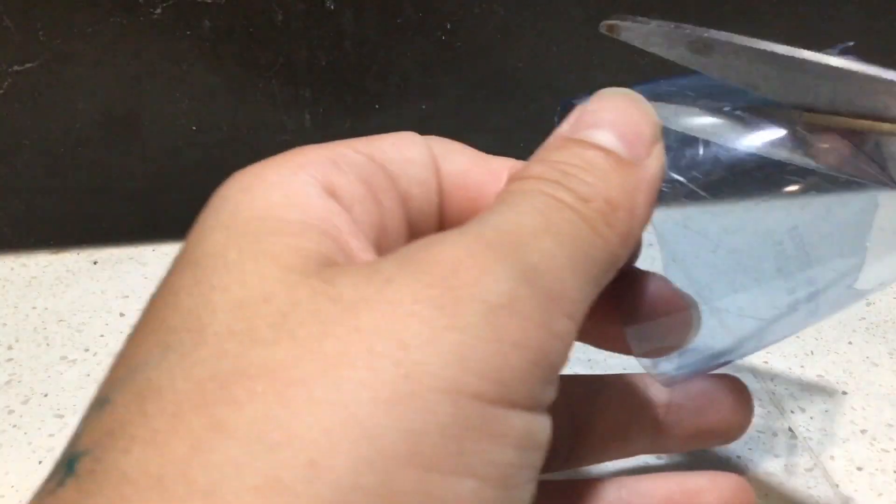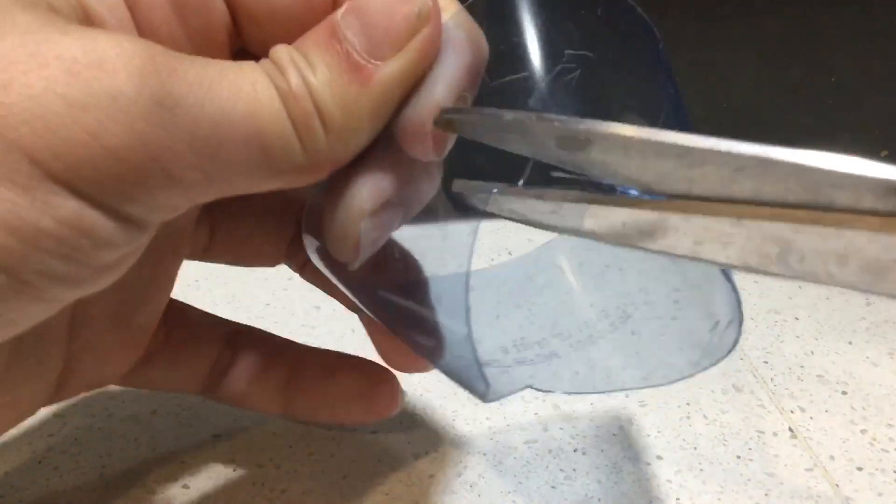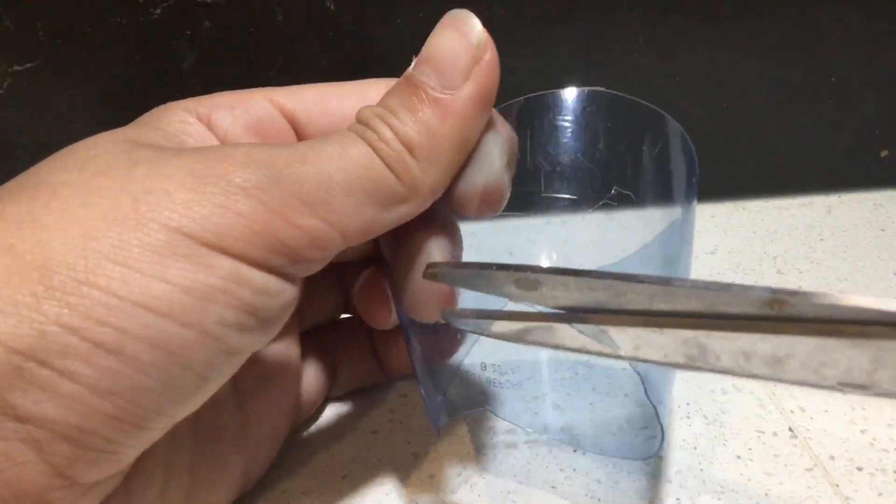First you're going to cut towards the middle of the bottle like so, and you're going to cut a V on the remaining of the bottle.